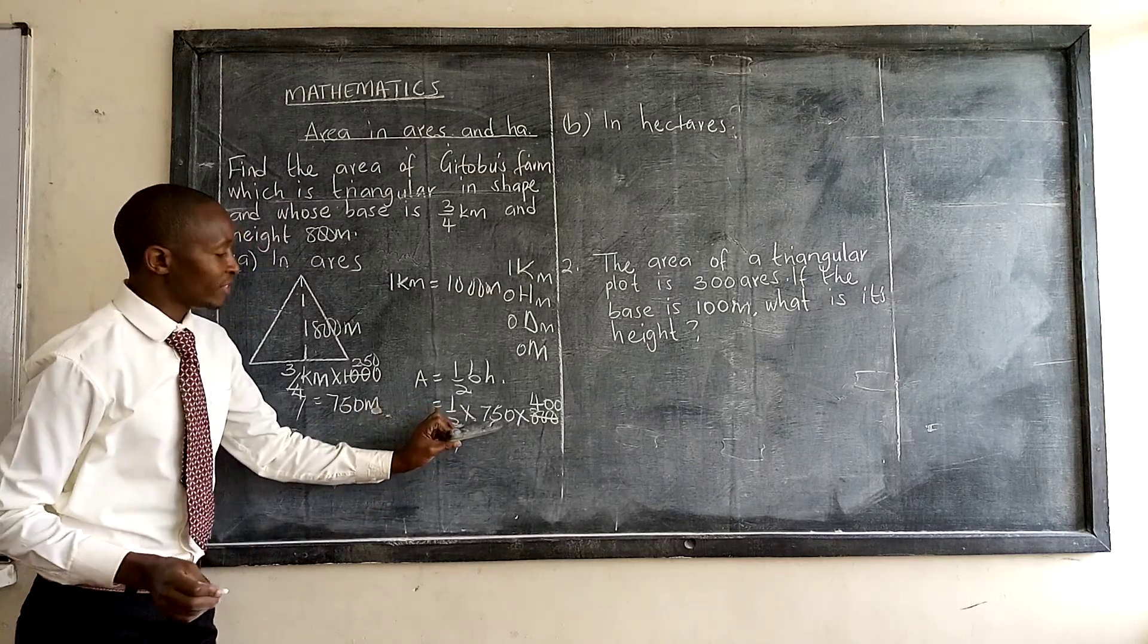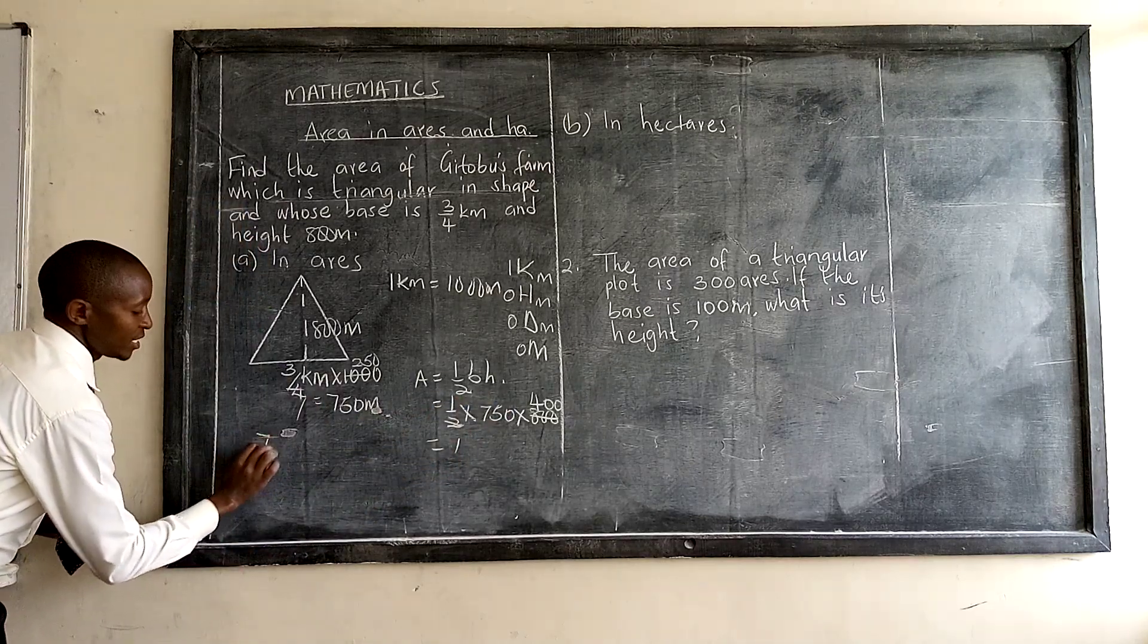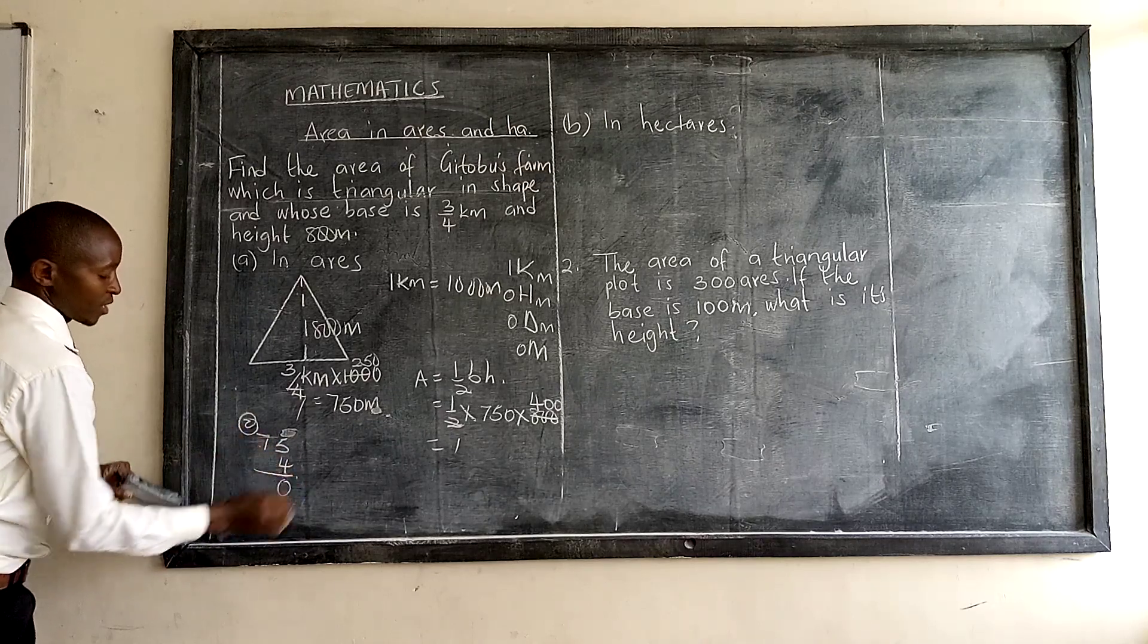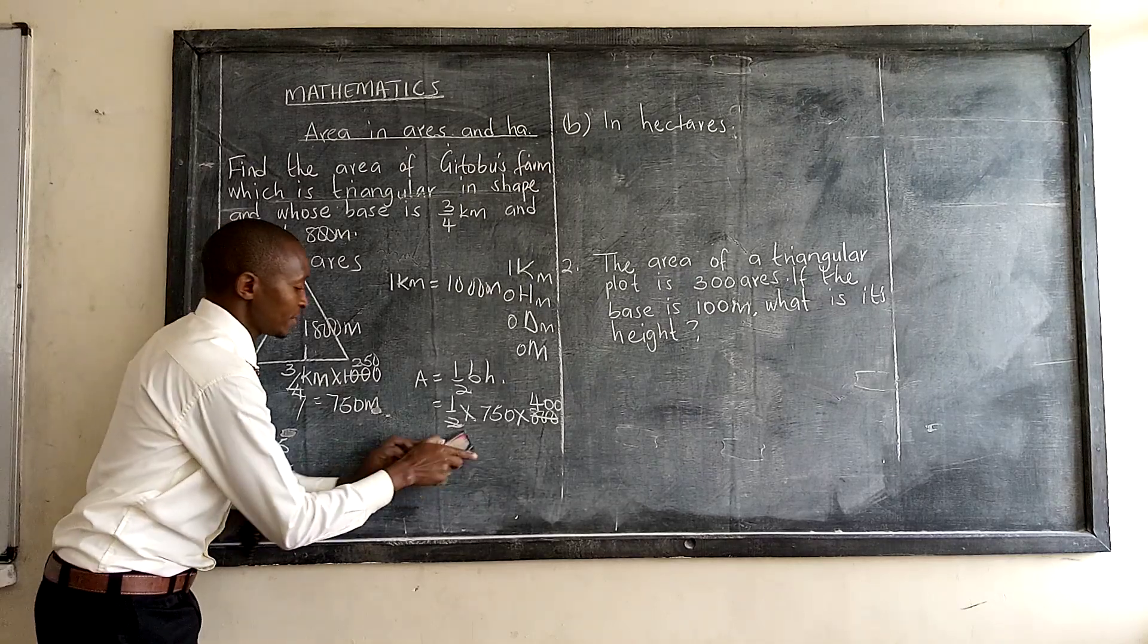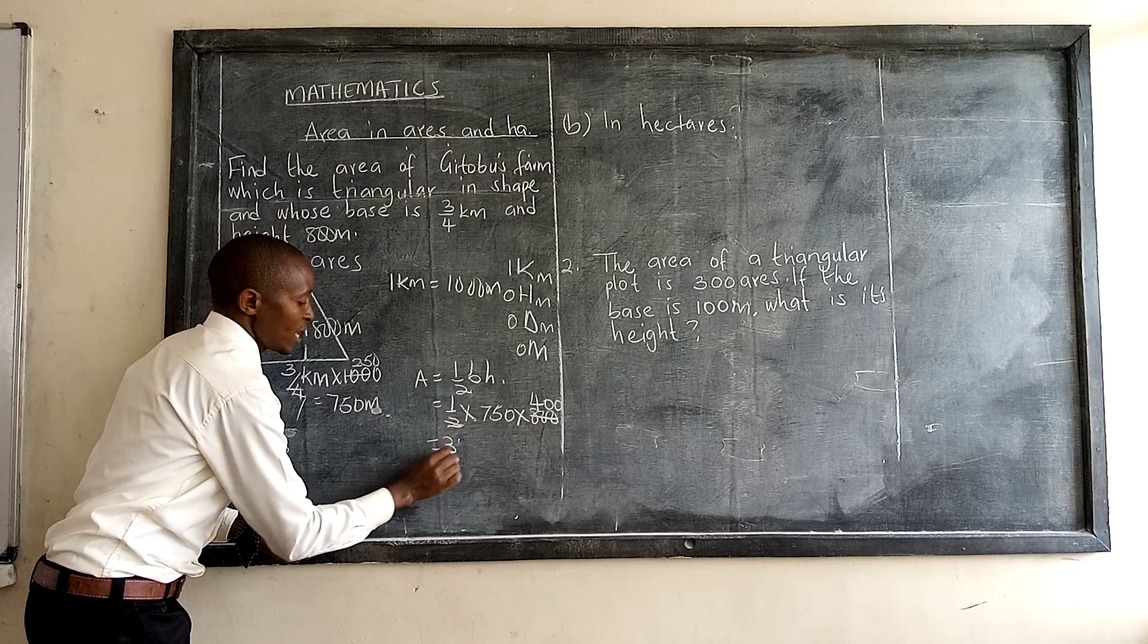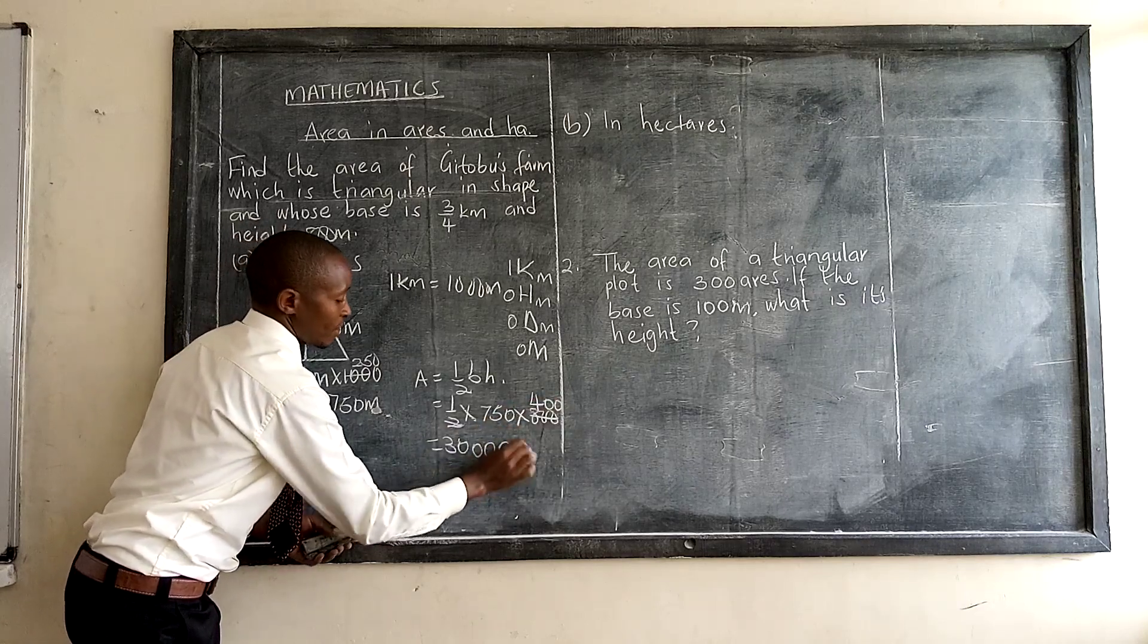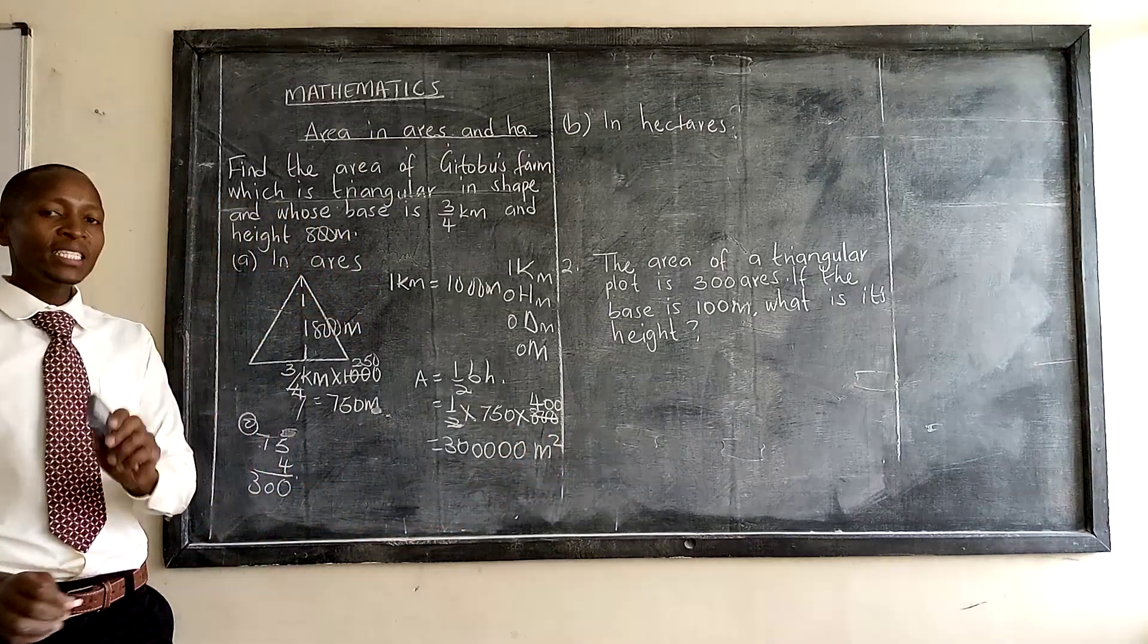We simplify by two. One by two, we get 400. When we multiply 750 by 400, here we have 75. If you multiply by four first, zero, that is 28. We get 300.